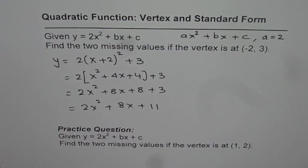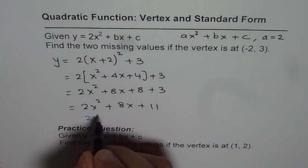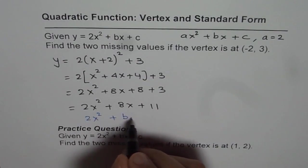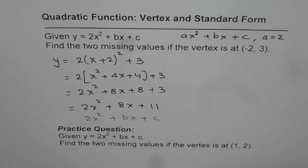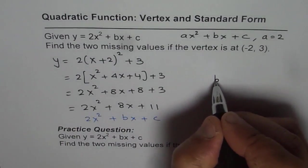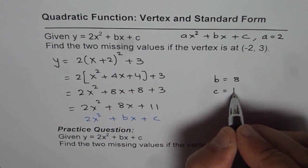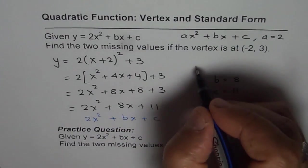Now comparing this equation with 2x² plus bx plus c, we can write down our answer. So we know b is 8. So we get our answer as b equals 8 and c equals 11. So that is our answer.